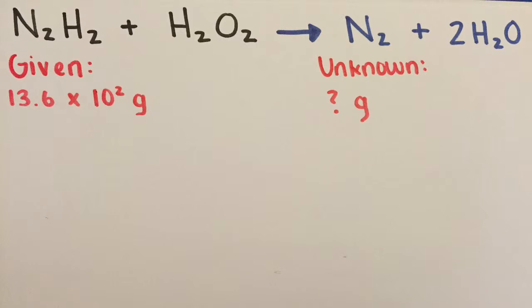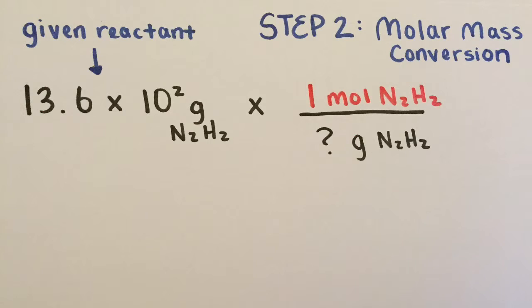The second step begins with knowing the given and the unknown. To make things easier, we could write them under where they belong in the chemical equation. So 13.6 times 10 to the second power grams of hydrazine would go under N2H2 and the unknown grams of nitrogen gas would go under N2. Continuing the second step, we must now convert the given mass of the reactant to moles, a simple conversion using the molar mass concept.